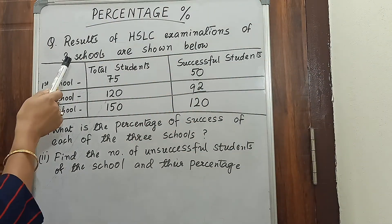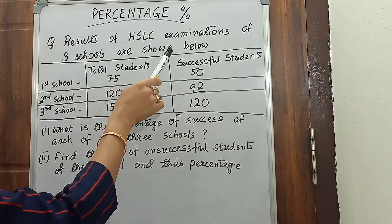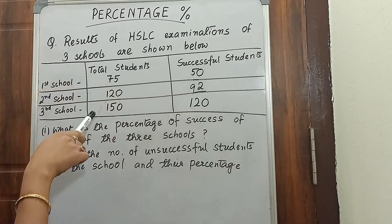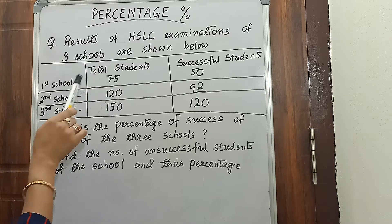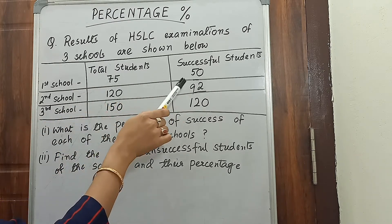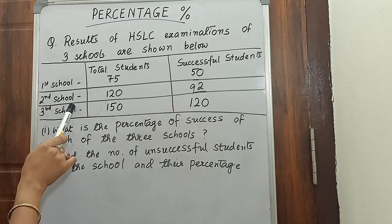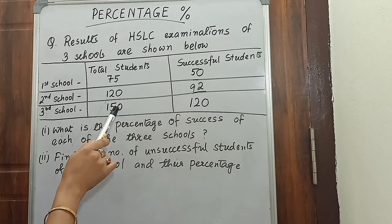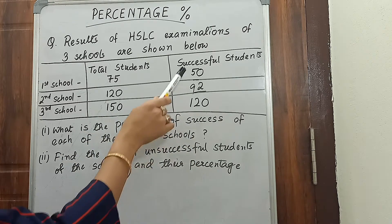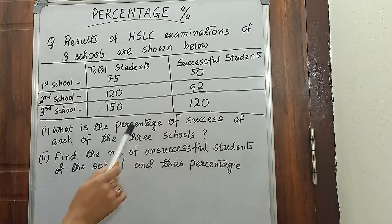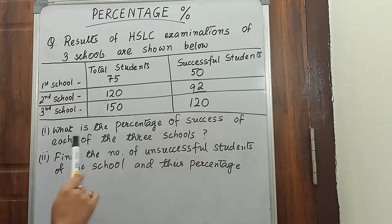Let us solve this question. Results of HSLC examinations of three schools are shown below. In the first school, 50 students passed out of 75 students. In the second school, 92 students passed out of 120 students, and 120 students passed out of 150 in the third school. We know the exact number of students but we don't know the pass percentage. So what is the percentage of success of each of the three schools?